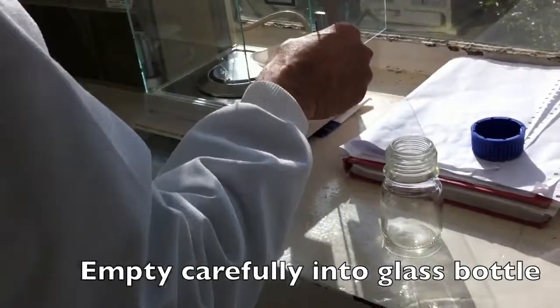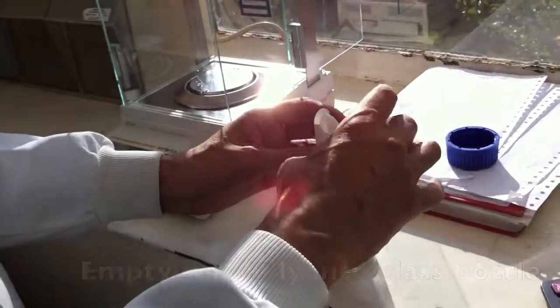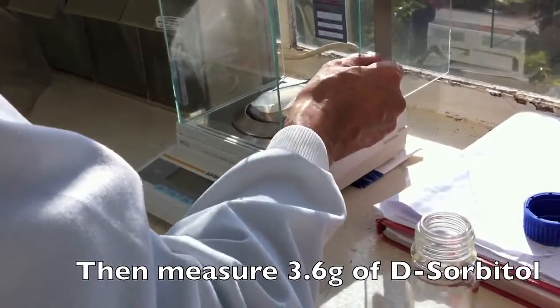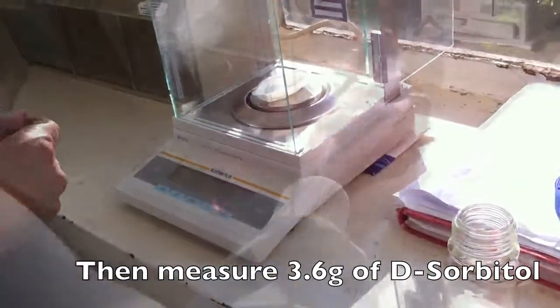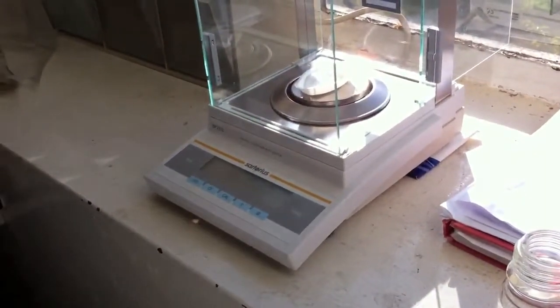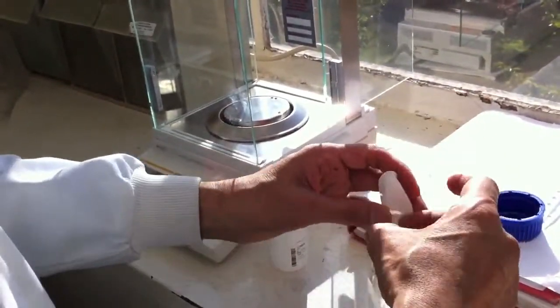Carefully empty all of the contents into the glass bottle provided. Then measure out 3.6g of D-sorbitol, which should be in the white bottle with the red lid. This should go in the same weighing boat as before. Empty all of the contents into the same glass bottle as the agarose.